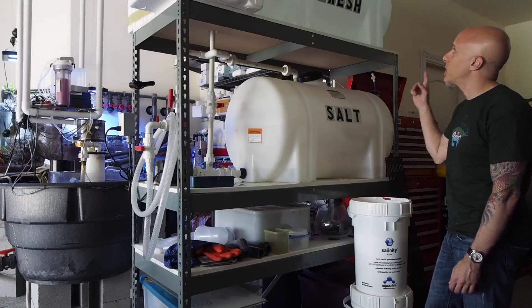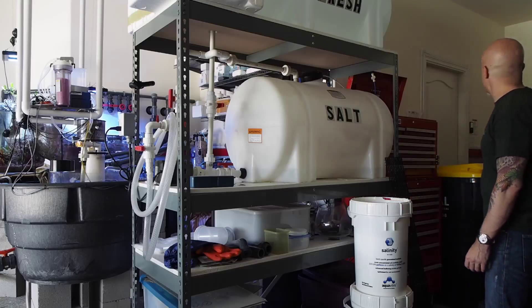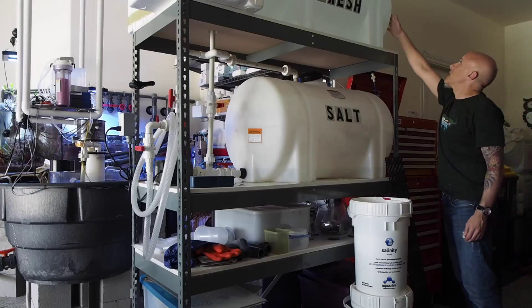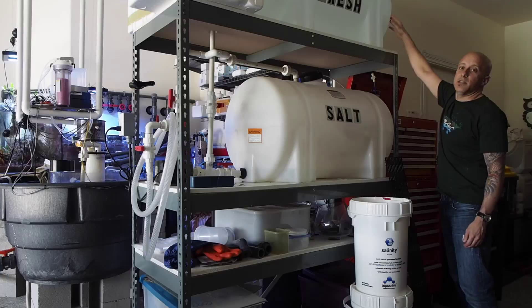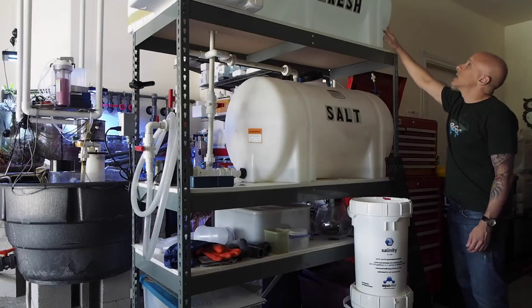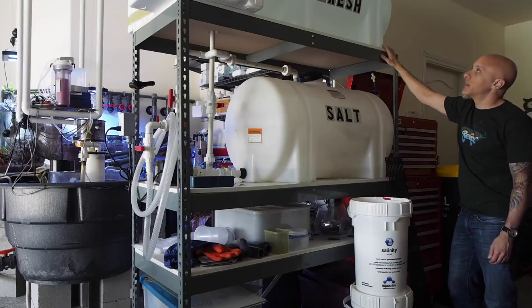The top one gets filled by the RO/DI unit. I've got the RO/DI units down here and I run the water line up to the top of this container. Inside is a float valve that's connected to the quarter inch water line with John Guest fittings. That fills up and it automatically cuts off the RO/DI units when it's done.